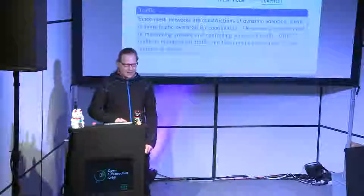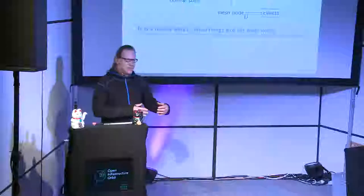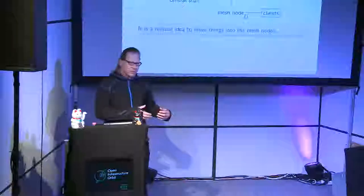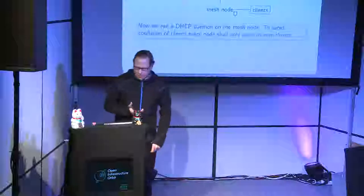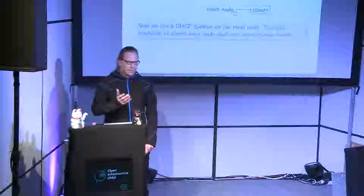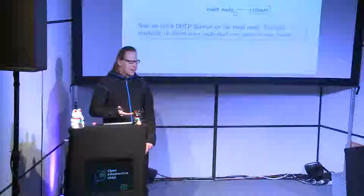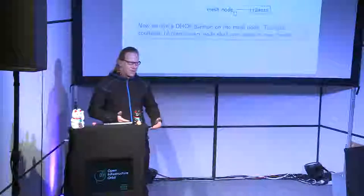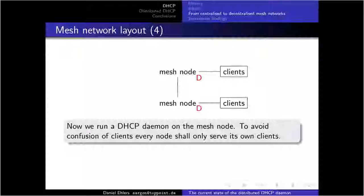If you have a thousand clients, you have a thousand clients speaking DHCP to the central network — and that's nothing we like. So it's a natural idea to move DHCP from the central infrastructure, which we want to get rid of, into the nodes. Now we have it in the nodes and we can get rid of the central components. To avoid confusion where multiple servers each announce an offer to the clients, we say one DHCP daemon on a node only serves its own clients.